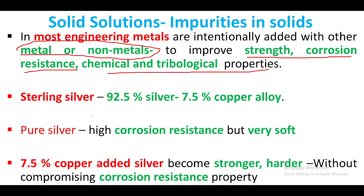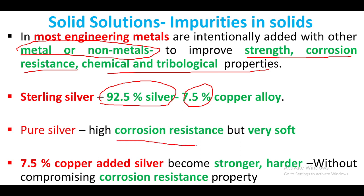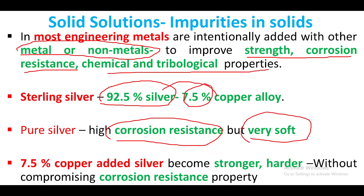For example, sterling silver: pure silver has high corrosion resistance but is a very soft material. So we add copper to the silver material to make it stronger and harder, while the corrosion resistance property is not affected. That is the purpose — adding one material improves the properties.